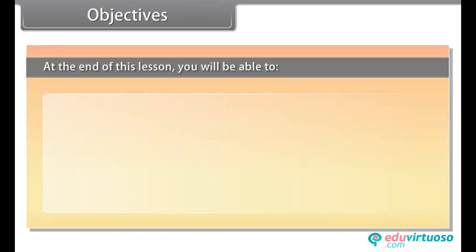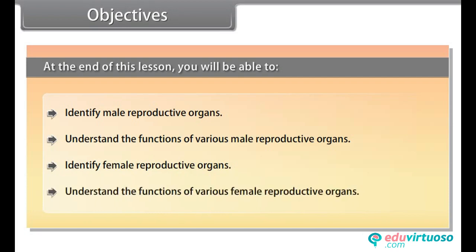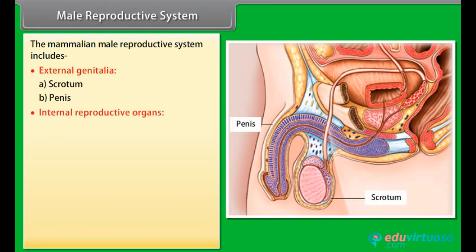At the end of this lesson, you'll be able to identify male reproductive organs, understand the functions of various male reproductive organs, identify female reproductive organs, and understand the functions of various female reproductive organs. The mammalian male reproductive system includes external genitalia: scrotum and penis, and internal reproductive organs.